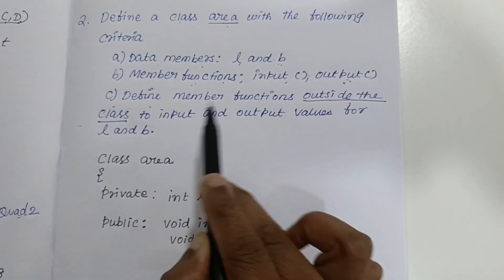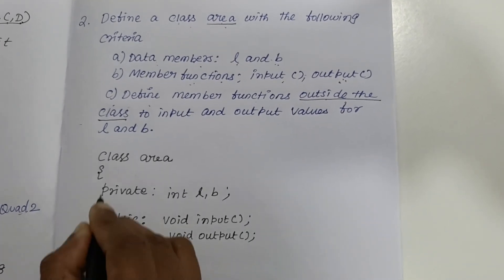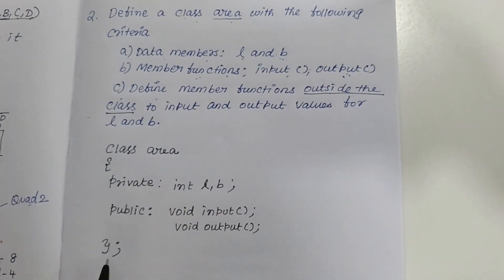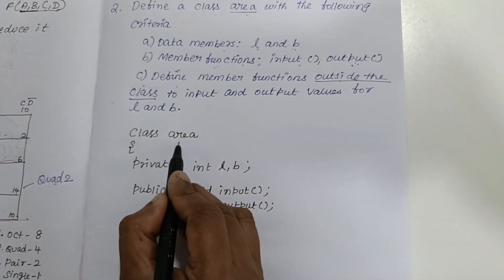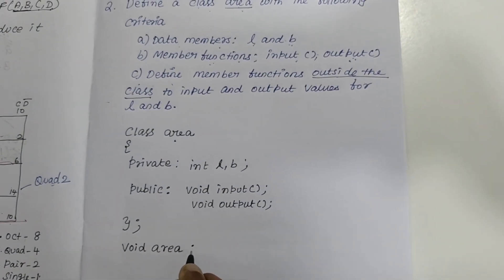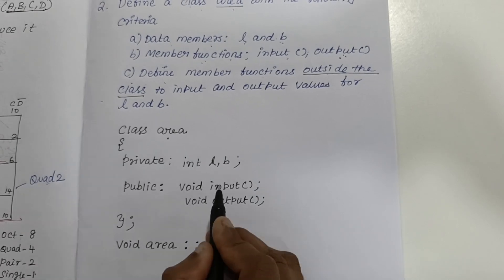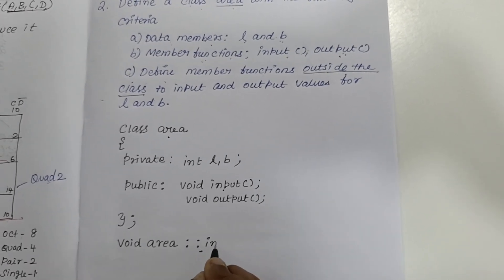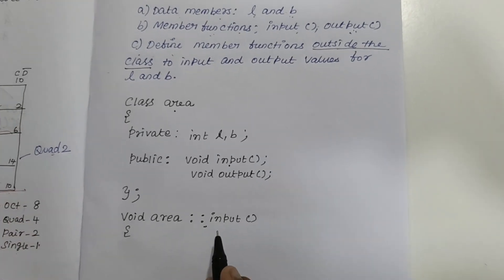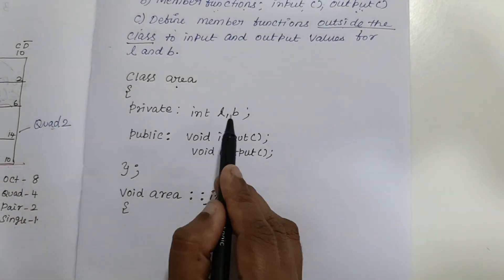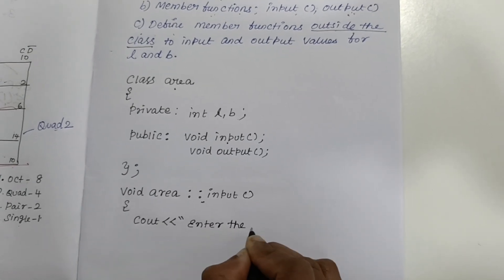Since we are writing the functions outside the class, you have to close the class now. Close the flower bracket with a semicolon — the semicolon is very important. Writing this much can get you one mark. Now to write outside the class, write: void area::input — the two dots are called the scope resolution operator, which helps you access the member function outside the class. Open the bracket to write the input functionality — you will receive values l and b from the user. Write: cout << 'Enter the length';